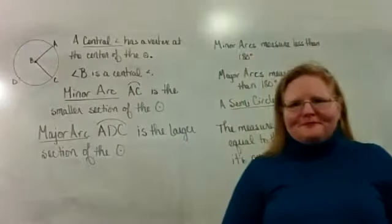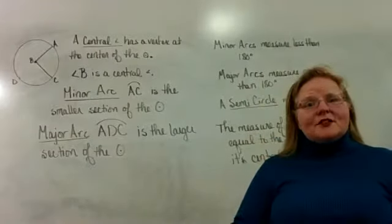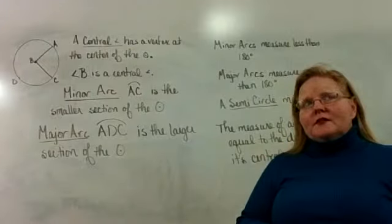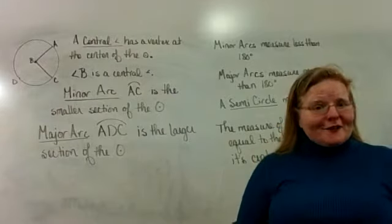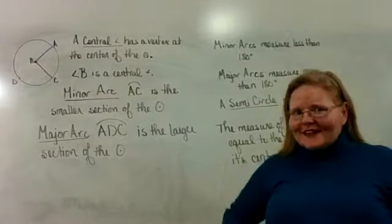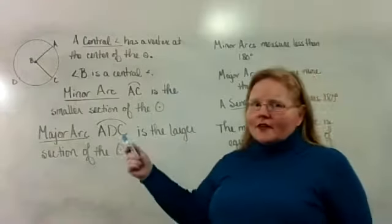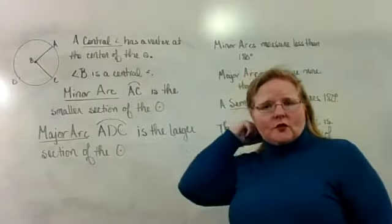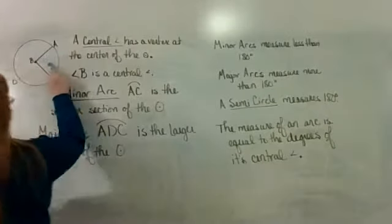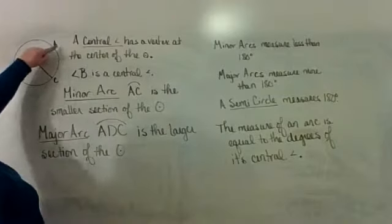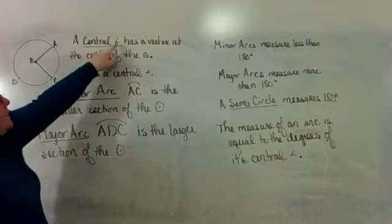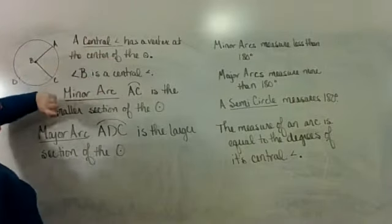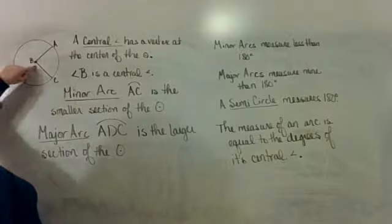Today we're talking about circles again, specifically arcs, which are parts of circles. We're talking about the line of the circle itself. A central angle is an angle that has its vertex at the center of the circle. Angle B here is a central angle because its vertex is at the center of circle B.